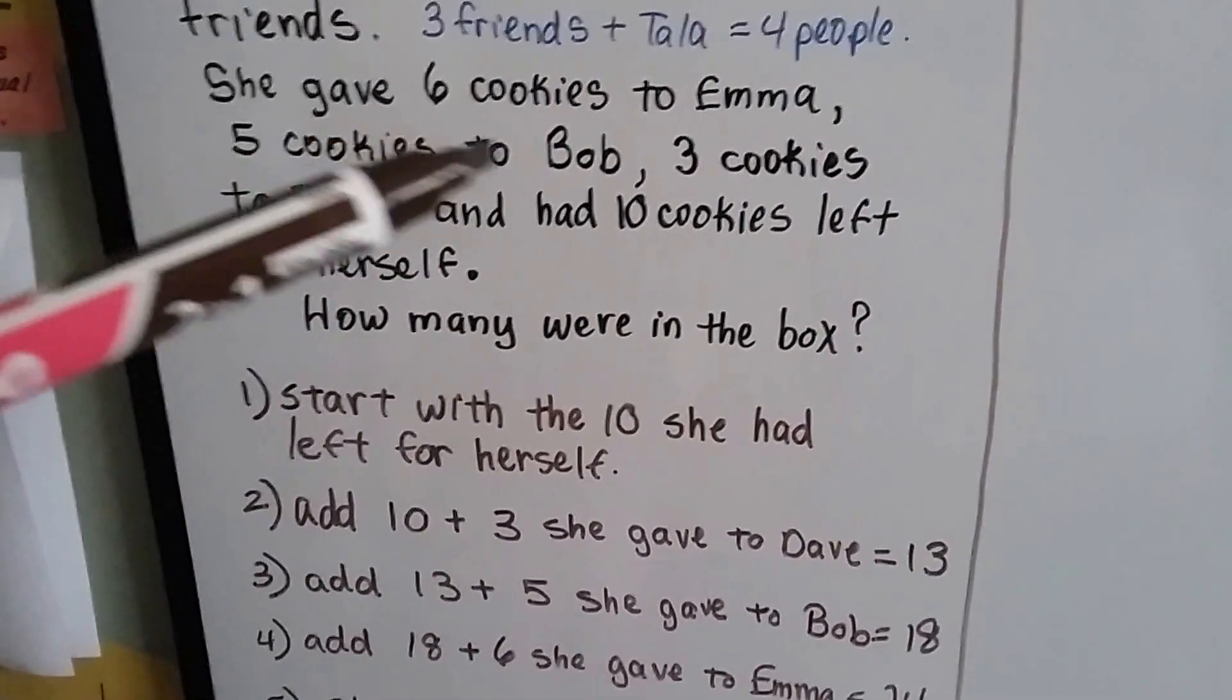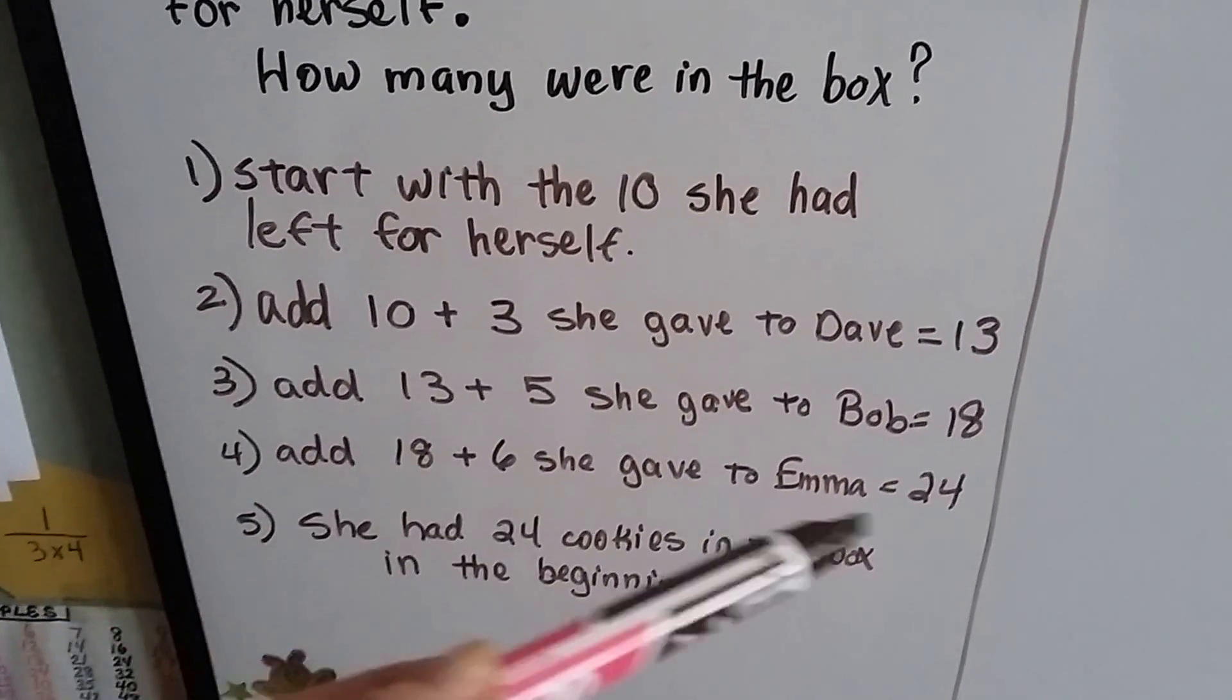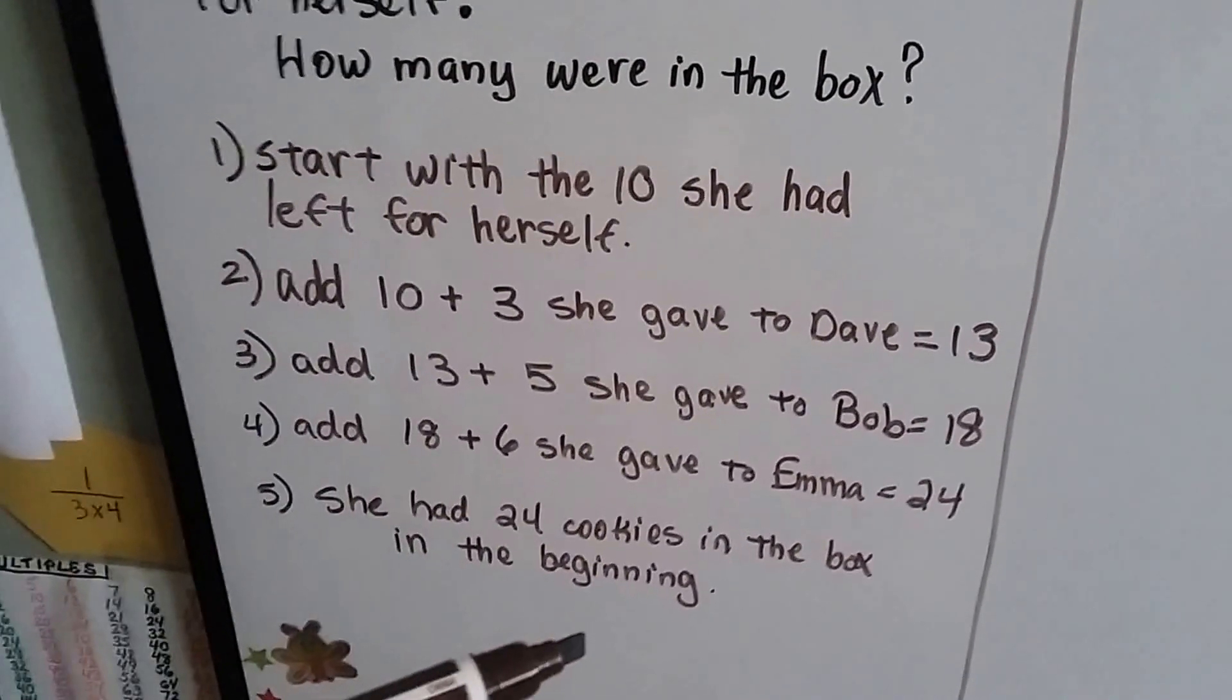Bob got five. Now we're going to add the six that Emma got, and eighteen plus six is twenty-four. So she had twenty-four cookies in the box.